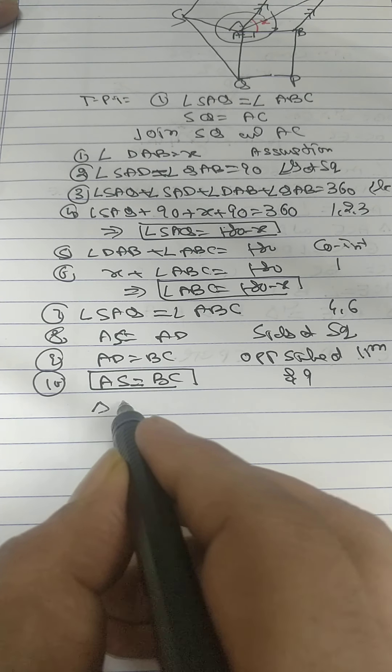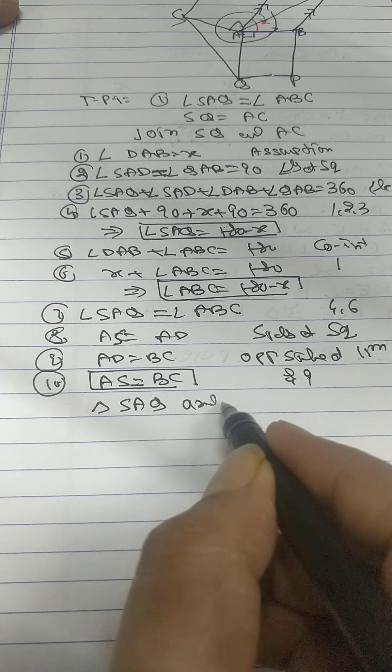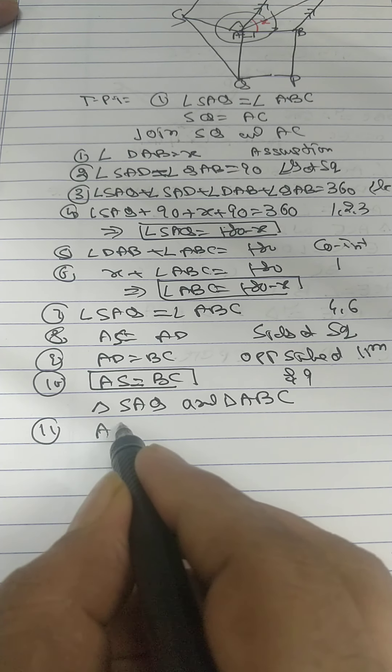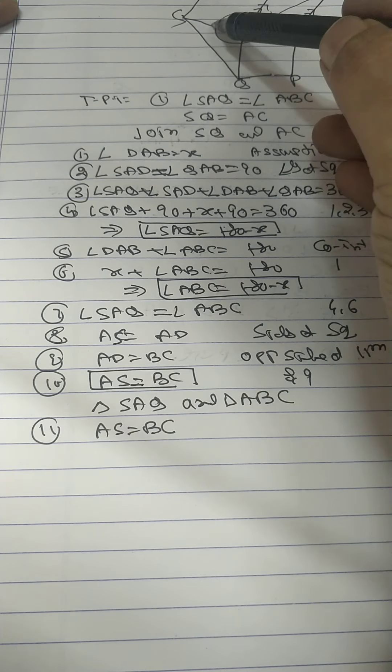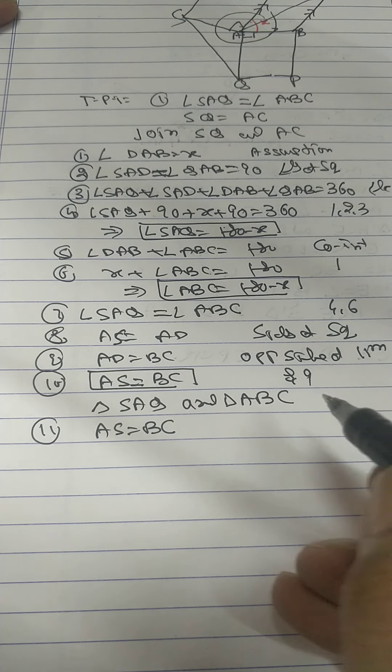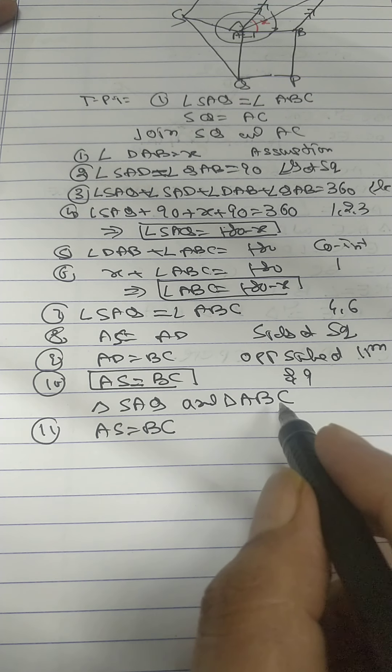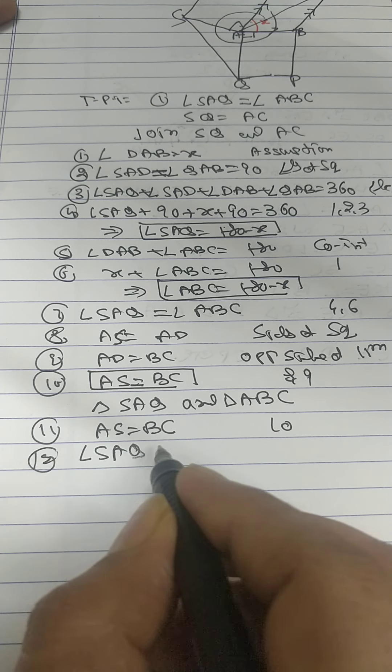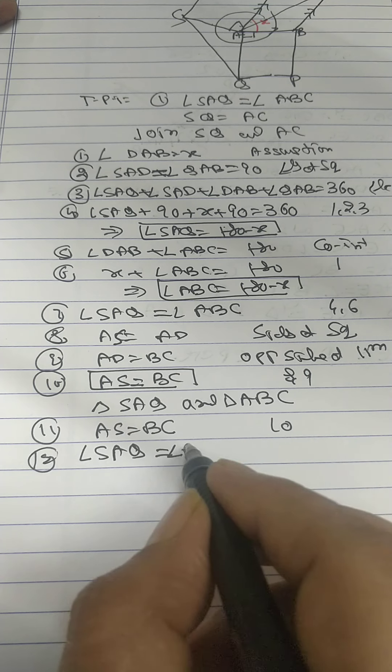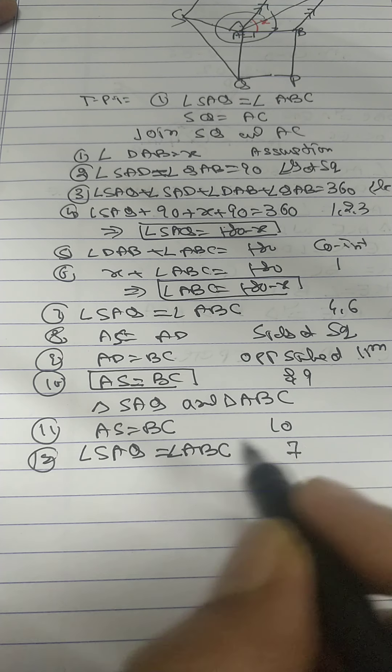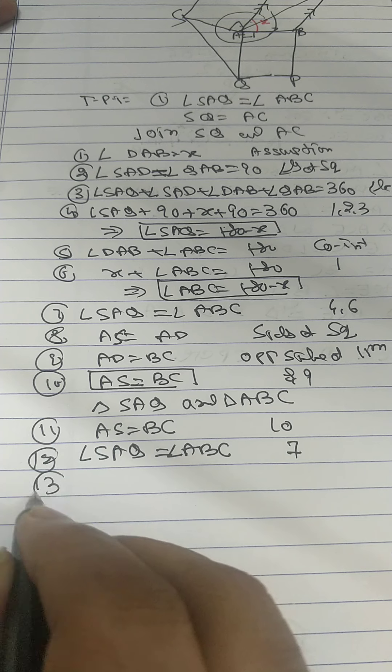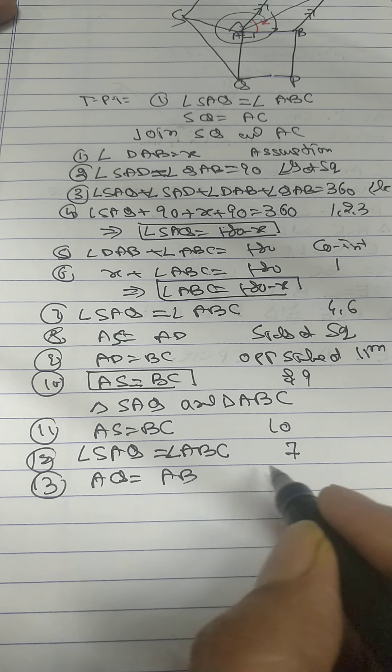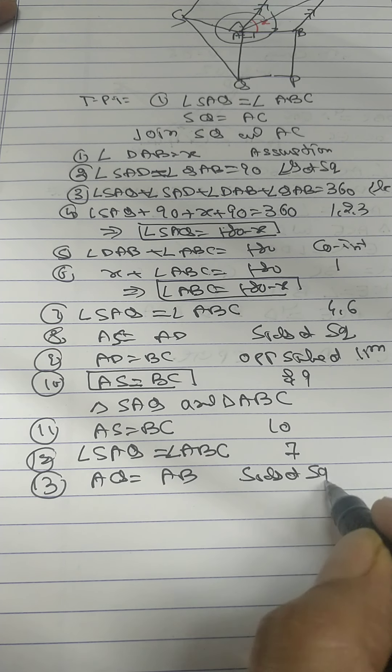Now take triangle SAQ and triangle ABC. AS equal BC. We proved in statement, the two are AQ equal AB, sides of square.